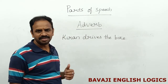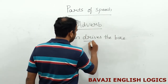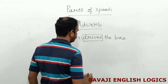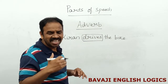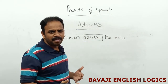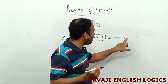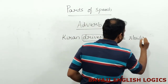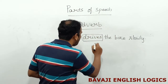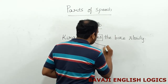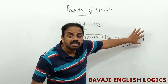Consider the sentence: Kiran drives the bike. Here, 'drives' is the verb. Now the question comes — how does he drive the bike? Whether it is fast or slowly. Kiran drives the bike slowly. So how does he drive the bike? Slowly. So the word 'drives' is the verb, and 'slowly' is modifying it.